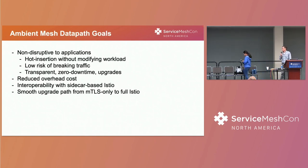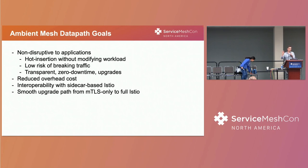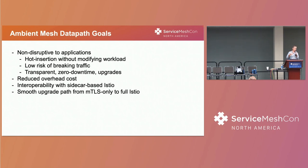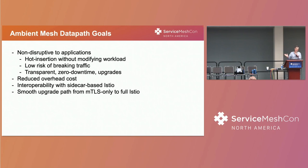The plan with ambient was to address those issues. The most important one from my point of view was not being disruptive to applications. Having the proxy as a sidecar requires restarting the application — you can't just hot-insert service mesh into your workloads. Because we're doing full L7 processing, there's also the chance we can break some applications that have non-compliant HTTP stacks. There is some stuff with the way we do MTLS upgrade in Istio that could cause some breakage. And when there are CVEs that need to be addressed in the proxy, upgrading requires restarting the workloads as well. So we wanted to be much less disruptive to applications.